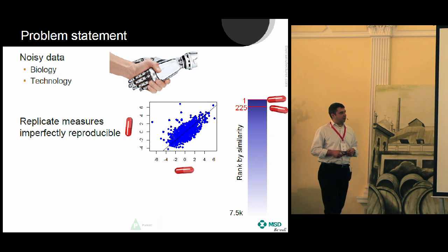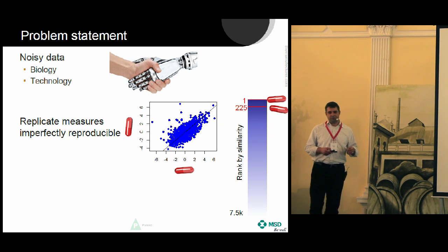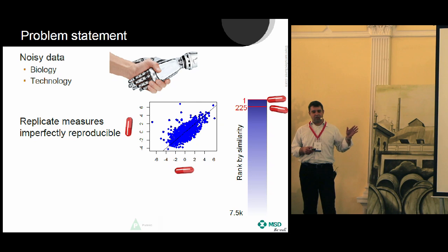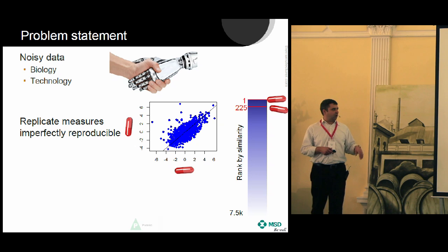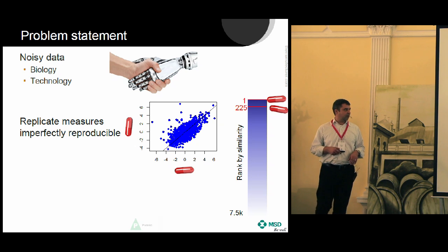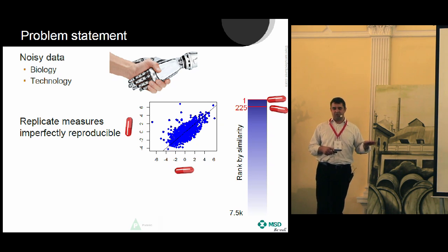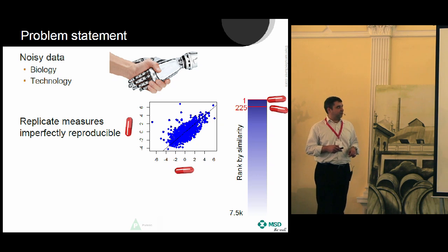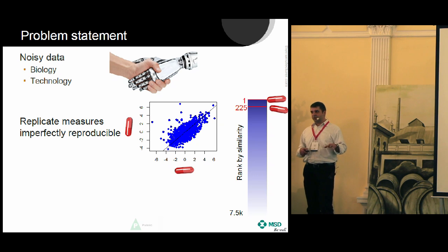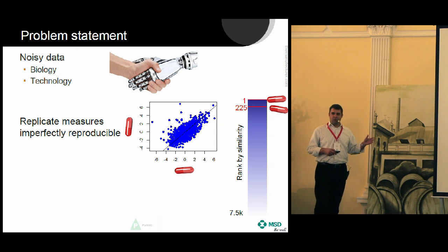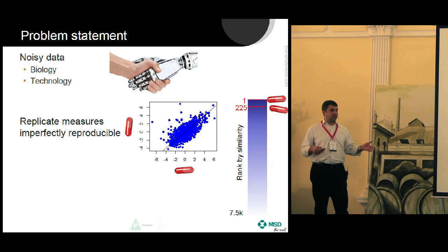If you take a compound and rank by similarity all of the other profiles in an experiment — in this case 7,500 profiles — and ask where in that ranked list, from most similar to least similar, its biological duplicate is — the same treatment done on a different day — on average it's 225th in the list. That means there are 223 samples which are more like your treatment than something that is actually the same treatment. This is what we're up against.